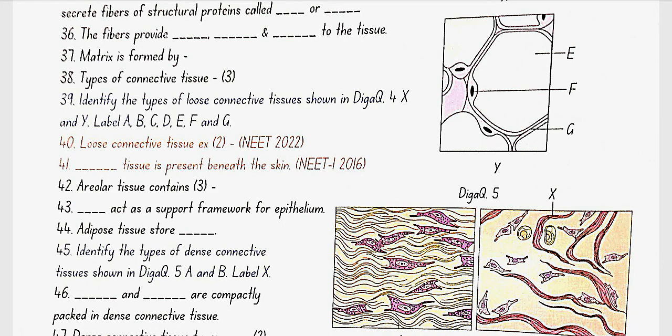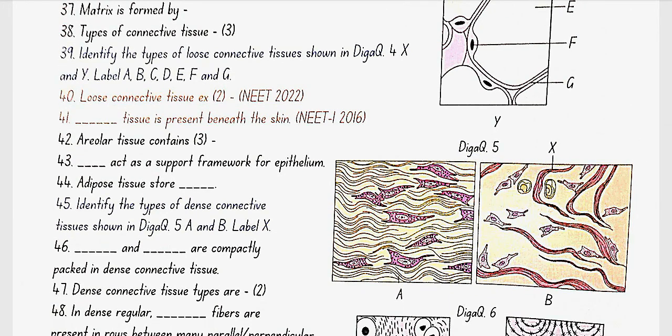Loose connective tissue examples: areolar and adipose. These tissues are present beneath the skin. Areolar tissue contains macrophages, fibroblasts, and mast cells. Areolar tissue acts as a support framework for epithelium. Adipose tissue stores fat.